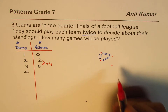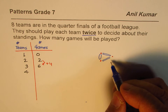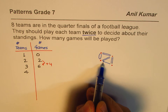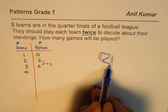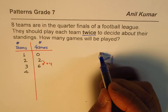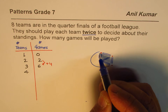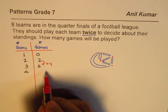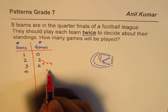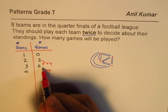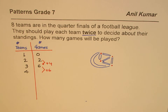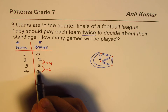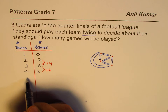How about four teams? If another team joins, it will play two games with each of the three existing teams — that's six more games. So six plus six gives us twelve games total.